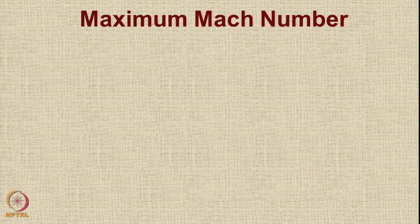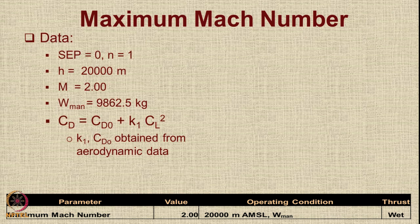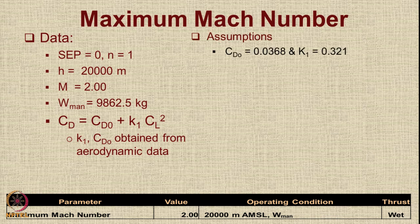Let us move to the next requirement: maximum Mach number. This is specified as a maximum of 2 while operating at 20,000 meters above mean sea level, at the maneuvering weight, with afterburner permitted — so thrust is wet. Maximum Mach number is obtainable by setting specific excess power equal to zero with load factor n = 1 in level flight. We need the values of CD_naught and K1 from the aerodynamic data.